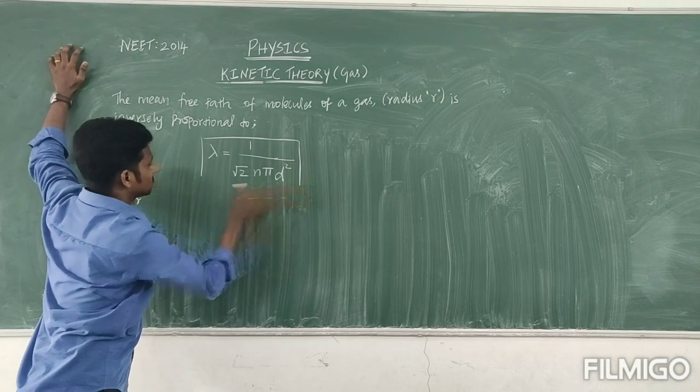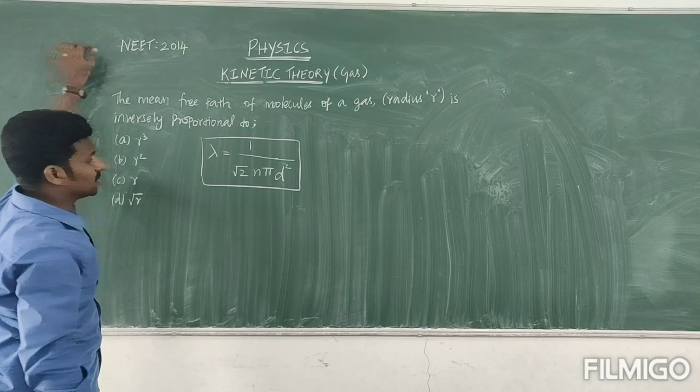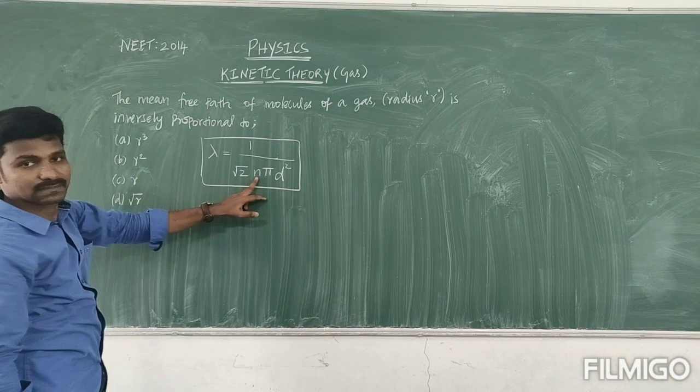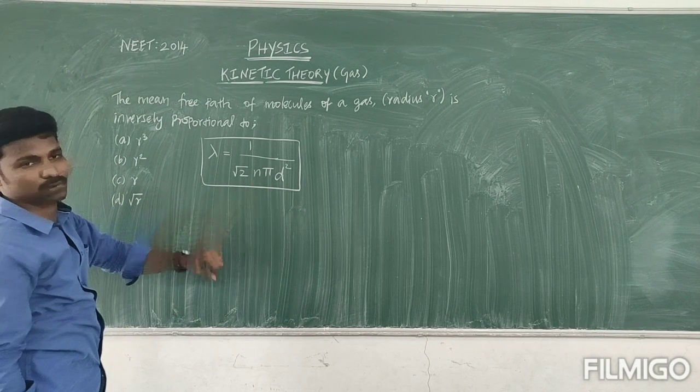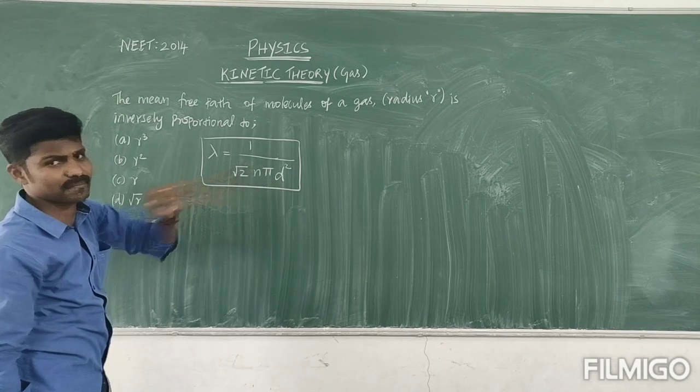So in this equation, n is nothing but number of molecules per unit volume, then d is the diameter of the molecule.